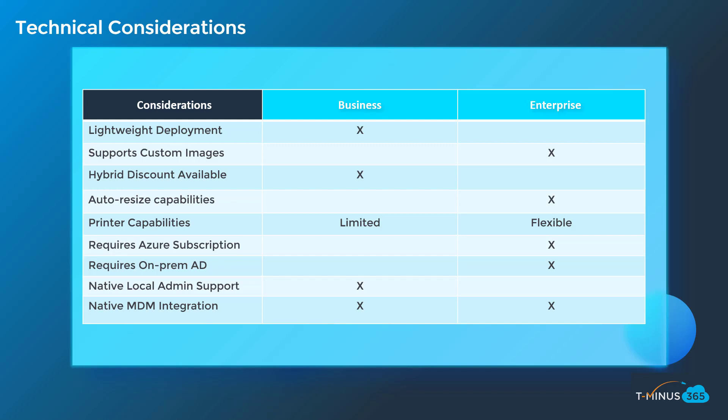Printer capabilities are limited with the business plan simply because you don't have access to the network layer, and it doesn't support newer technologies like Universal Print just yet. With the enterprise level plan, you do have access to all those capabilities, so your printer capabilities are more flexible. The enterprise level plan does require an Azure subscription and a hybrid connection with an on-premises Active Directory, which could be local or spun up within Azure itself.